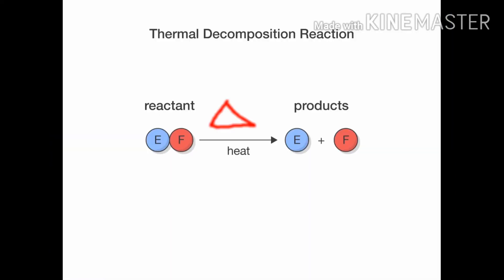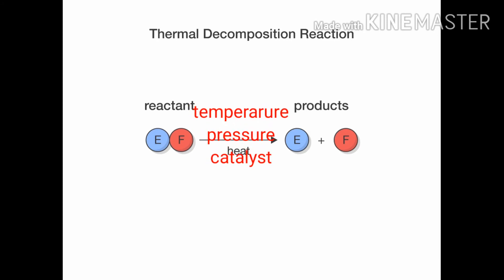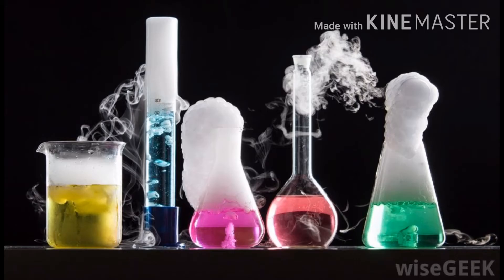Product मध्ये gas तयार झालेला असेल तर तो upward arrow ने दाखवतात, आणि precipitate तयार झाला असेल तर ते downward arrow ने दाखवतात. जर chemical reaction साठी heat दिलेली असेल तर ती triangle या sign ने arrow वर दाखवतात, आणि heat तयार झाली असेल तर ती plus sign ने product च्या बाजूला दाखवतात. Temperature, pressure, आणि catalyst हे arrow वर दाखवतात. Reactant आणि product चे concentration bracket मध्ये त्यांच्या base ला दर्शवले जाते. या सर्व गोष्टी म्हणतात conventions used while writing the chemical equation.